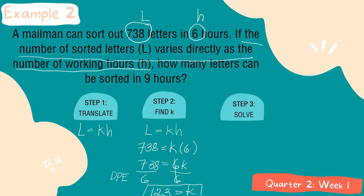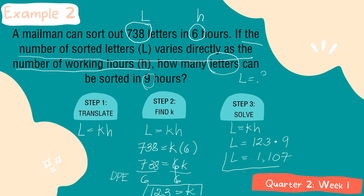For the last step, we have to solve for the unknown. The problem asks how many letters can be sorted in 9 hours, so the value of L is missing. Using the equation from step one and substituting K equals 123 and H equals 9: L is equal to 123 multiplied by 9, which equals 1107. Therefore, there are 1107 letters that can be sorted in 9 hours.